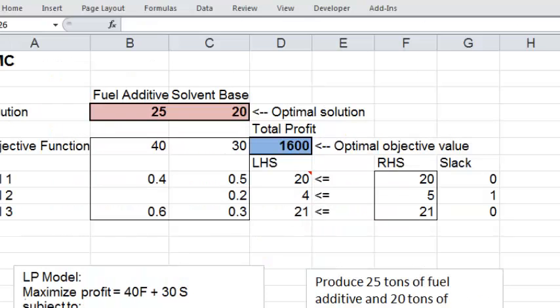First, for example, suppose the sales department at this company says you need to make at least 100 tons of fuel additive because the company's major customer placed an order for 100 tons. Is this possible? Maybe if we devote all our resources, all the materials, to making just fuel additive?